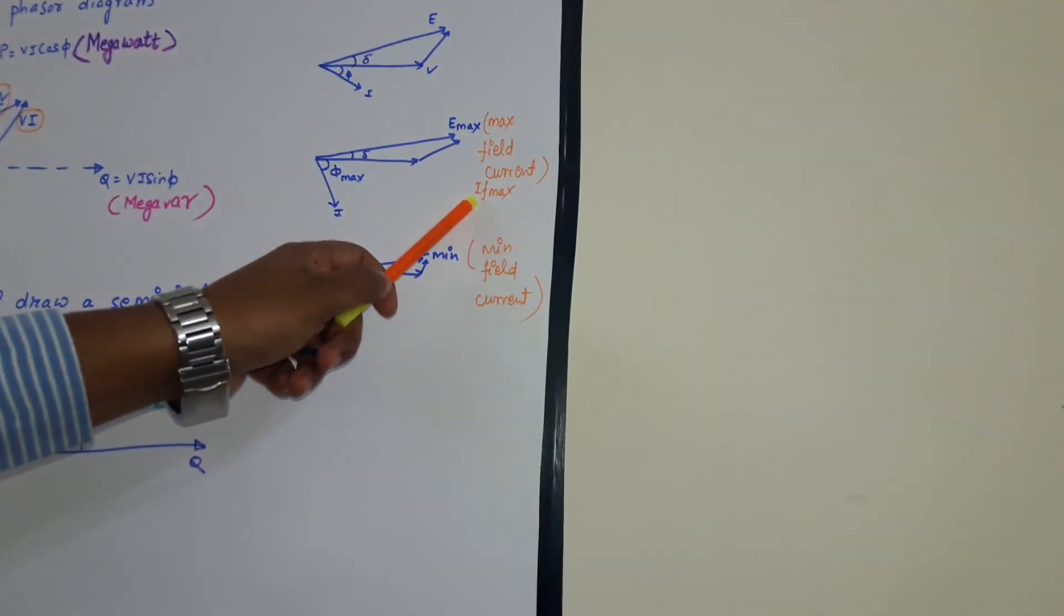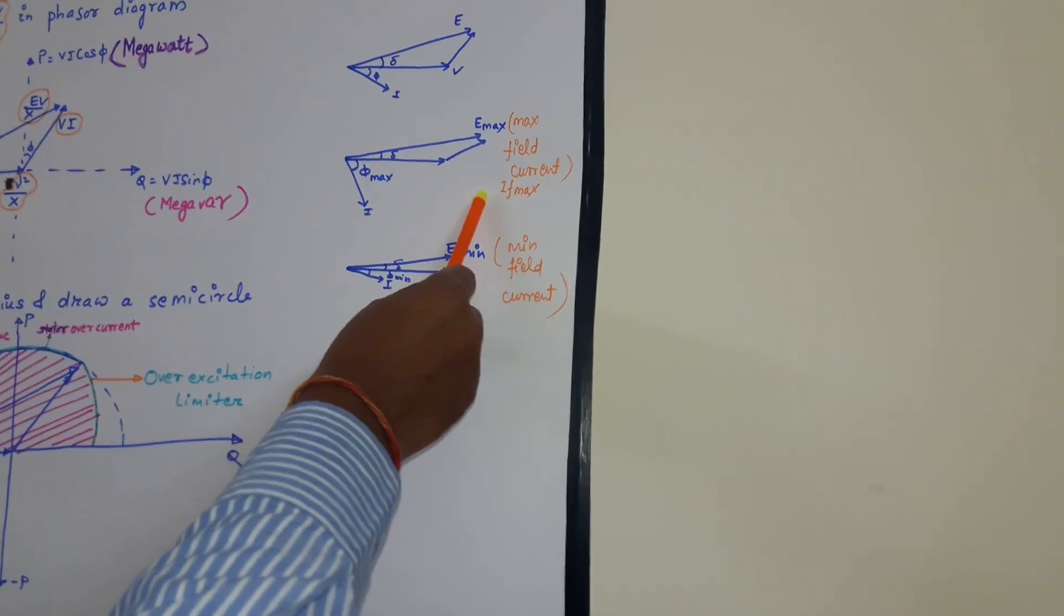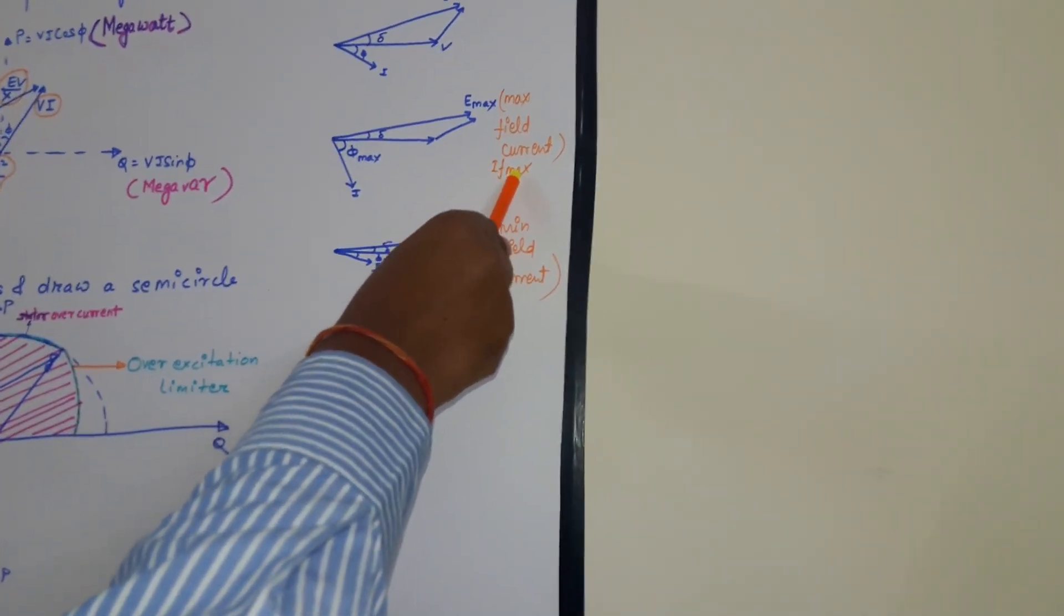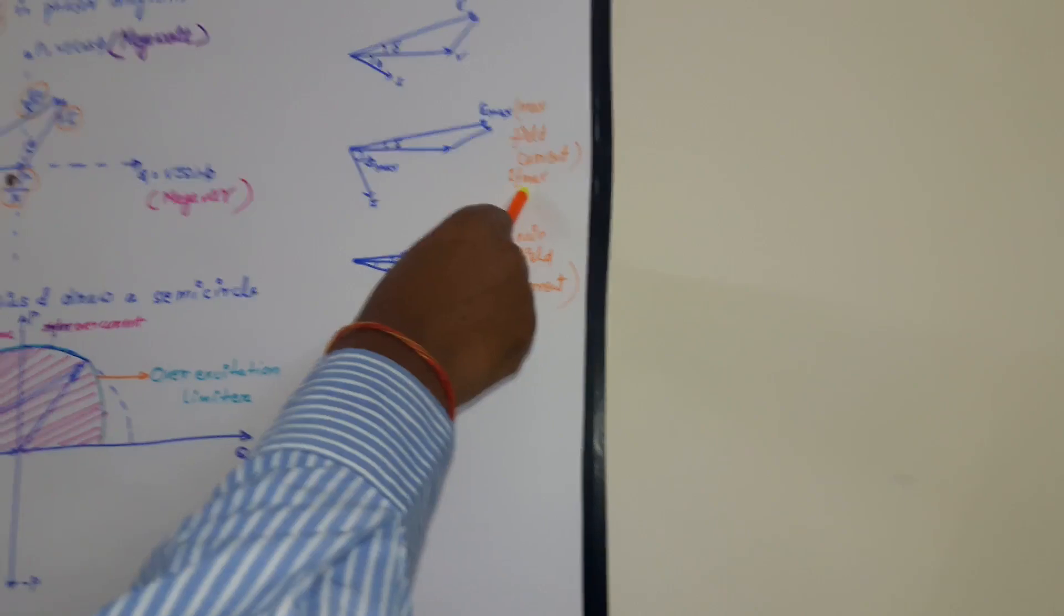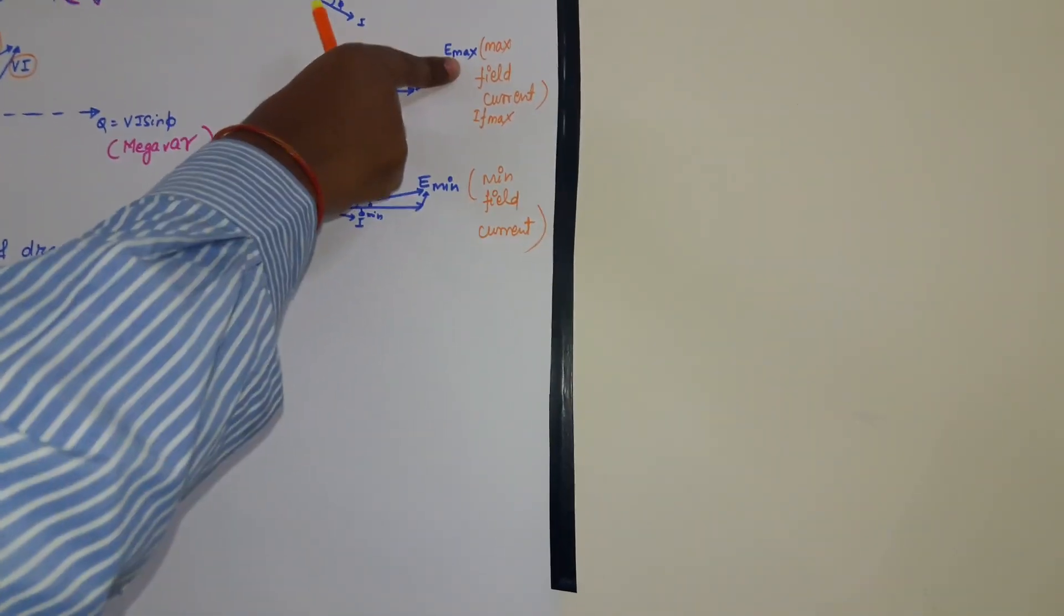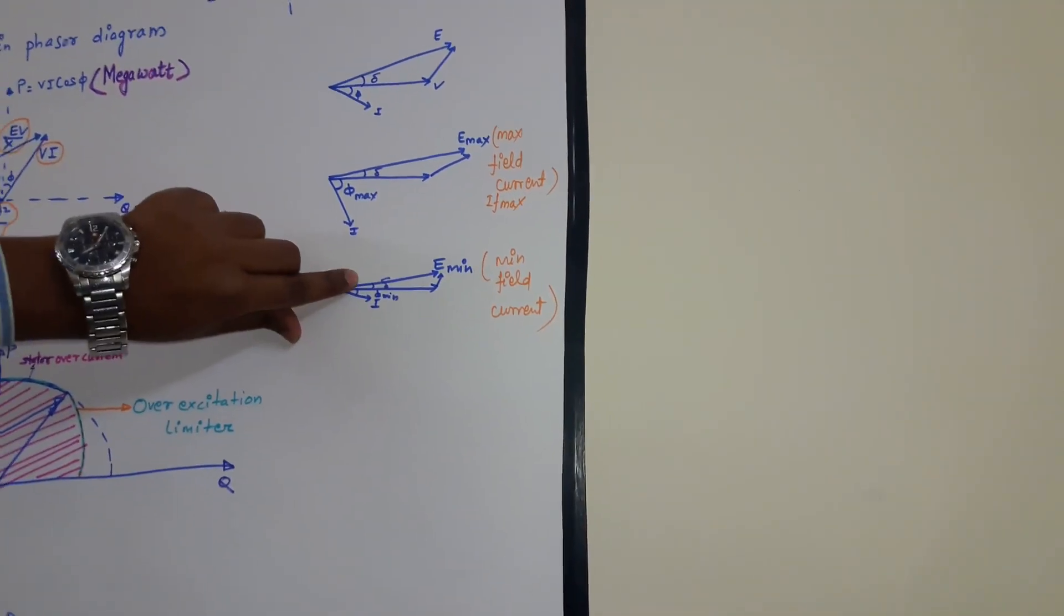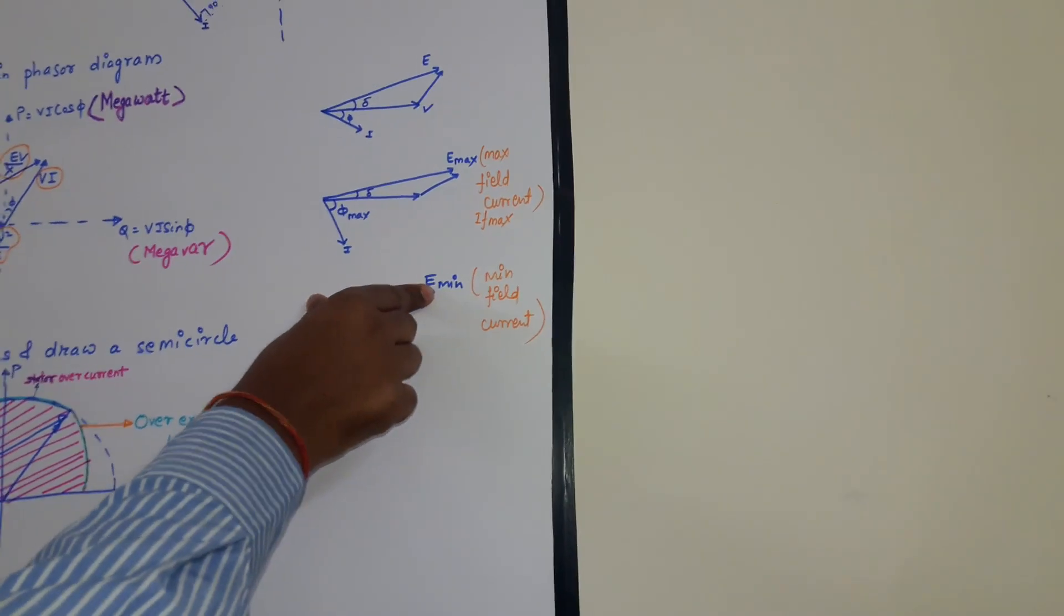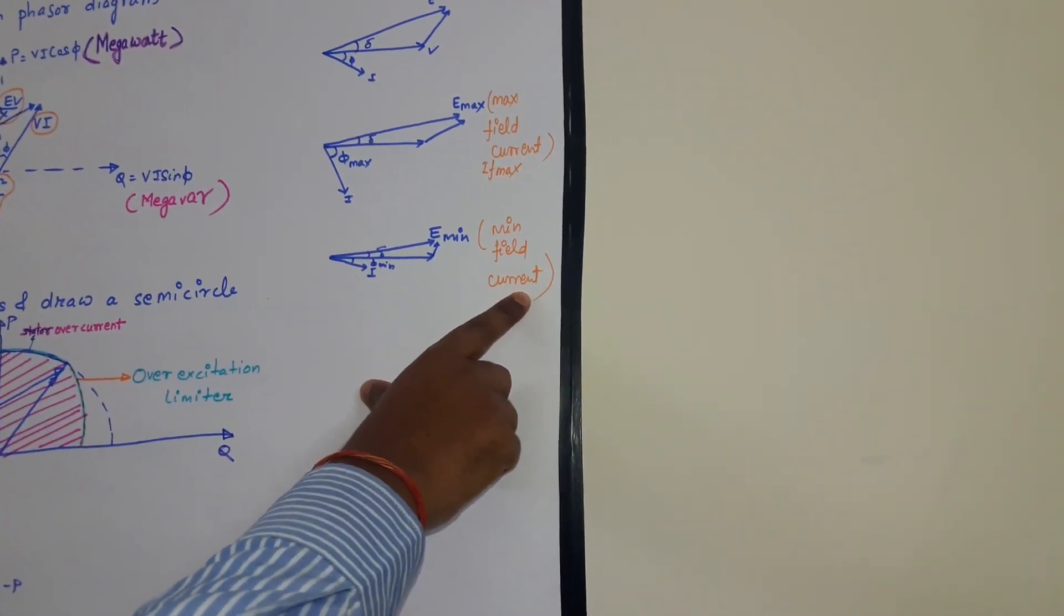And this field current is absorbed by the rotor winding. So the rotor winding has certain limitations. Beyond IF max if we will inject field current, the field winding may damage due to overheating. So E max is the maximum limitation.